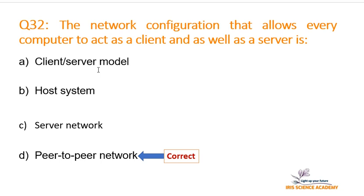These network-related models are very important because through them we can control the network in different ways as per our required situation. We can also use a Hybrid Model, which is a combination of the Client-Server Model and the Peer-to-Peer Model. For example, one server placed in an area acts as a server for clients in that area, but it is also connected to a server in another area — so those two servers act as peer-to-peer while also having their own clients. This is called a Hybrid Model.